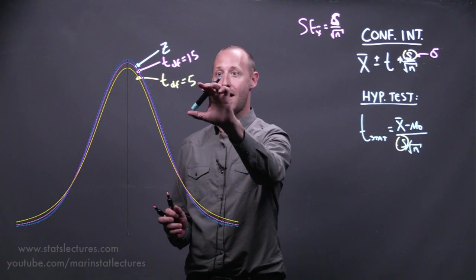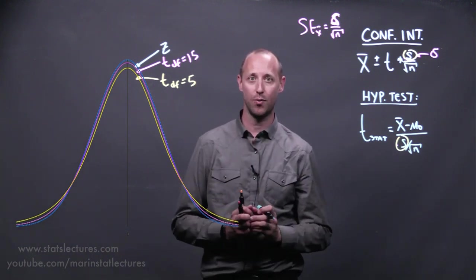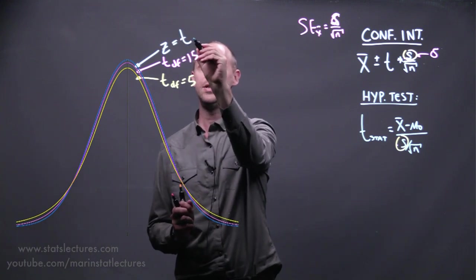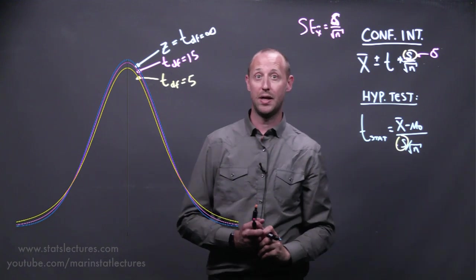As our degrees of freedom increase, the t-distribution looks more and more like the normal. In fact, a t-distribution with degrees of freedom of infinity becomes the normal.